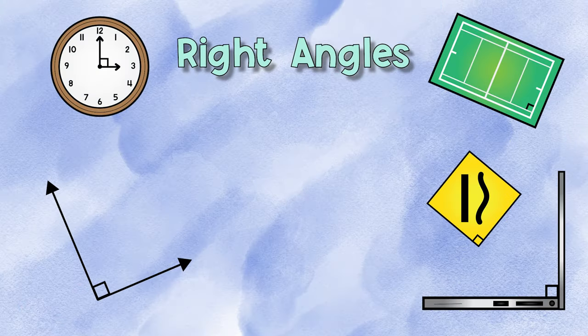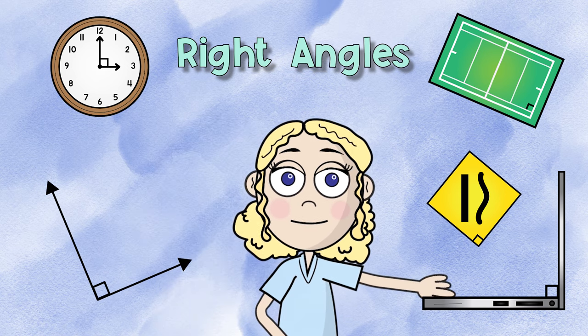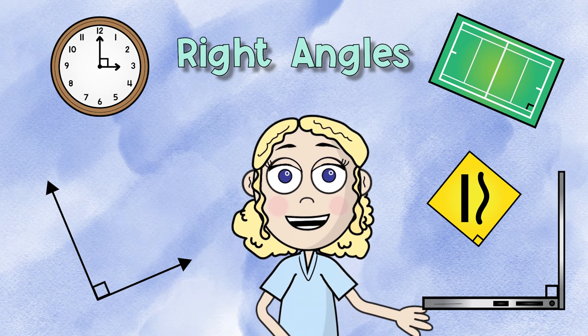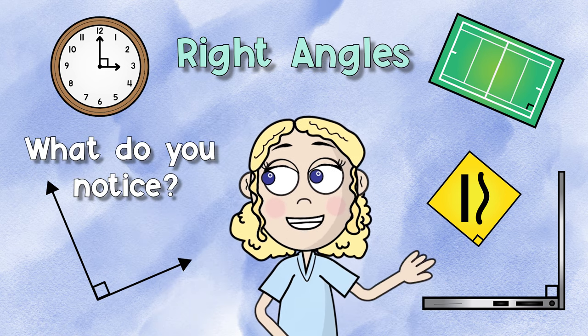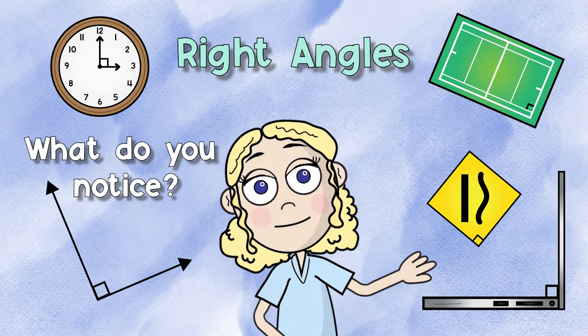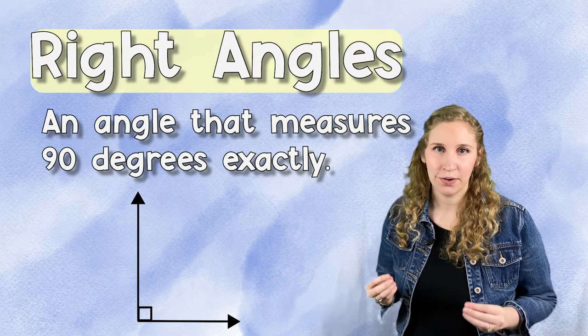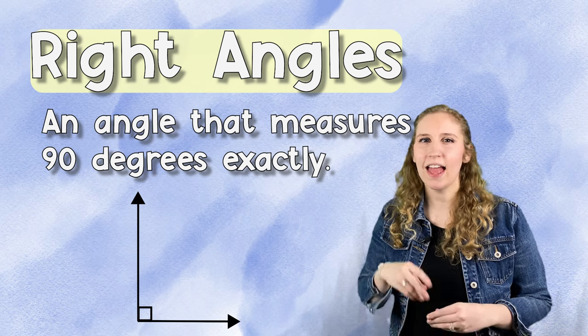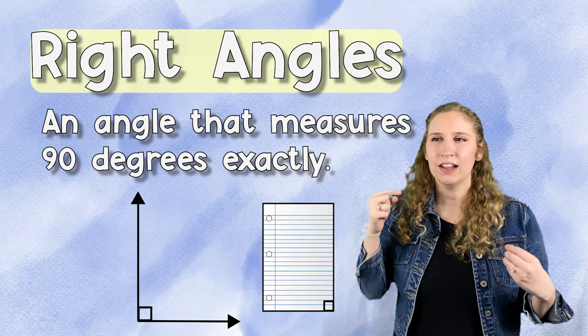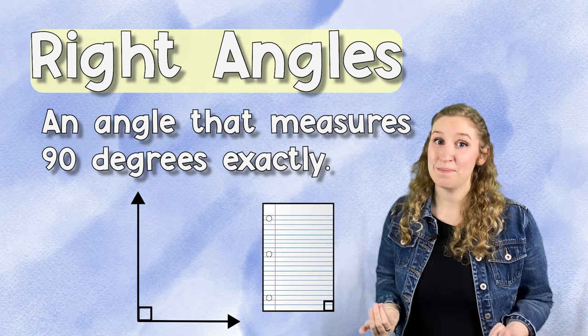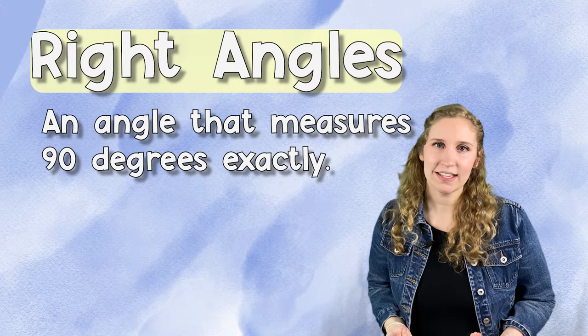The next type is right angles. Let's take a look at these. What do you notice about these angles? How are they similar and how are they different? That's right, right angles are exactly 90 degrees. I always like to tell students they're like the edge of a piece of paper. They look like a perfect corner and many students are super familiar with this.